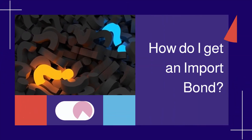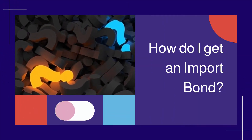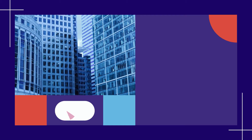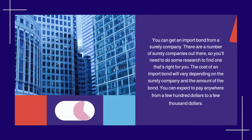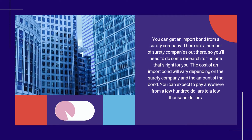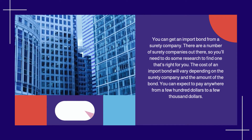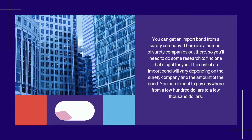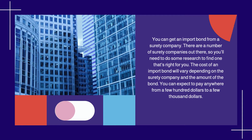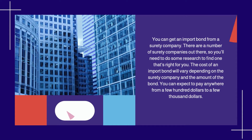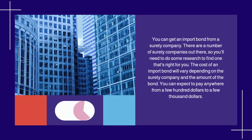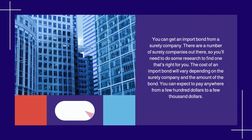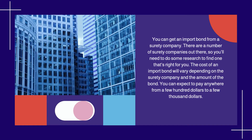How do I get an Import Bond? You can get an Import Bond from a surety company. There are a number of surety companies out there, so you'll need to do some research to find one that's right for you. The cost of an Import Bond will vary depending on the surety company and the amount of the bond. You can expect to pay anywhere from a few hundred dollars to a few thousand dollars.